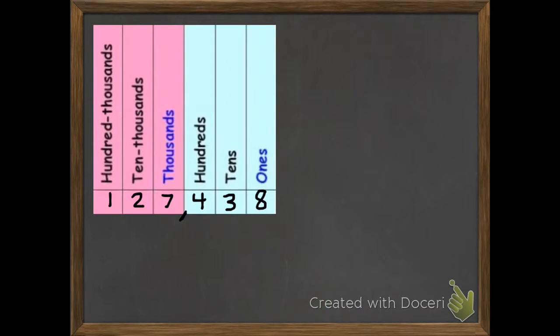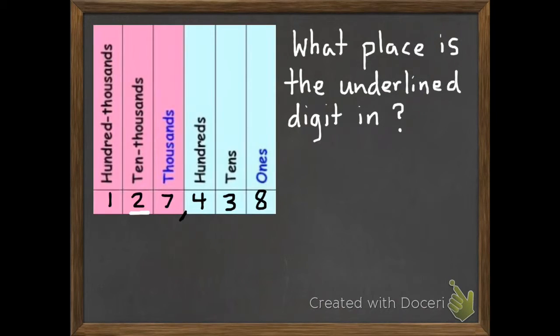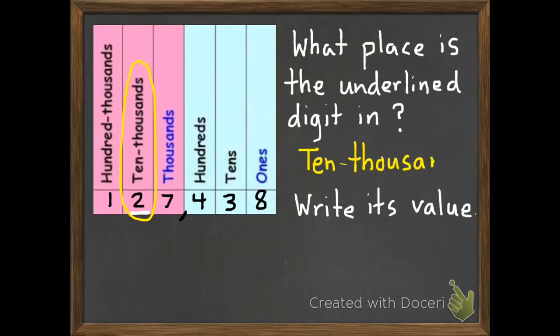Here is my first example problem. I have a number of 127,438. The question I'm going to answer is, what place is the underlined digit in? And then I need to write its value. So the 2 is in the ten thousands place. And if we have two ten thousands, then the value of that two would be 20,000.